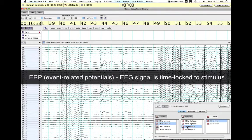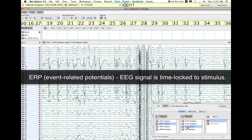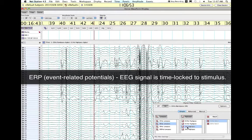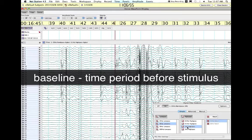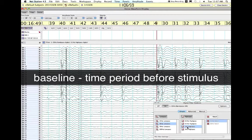When the EEG signal is time-locked to a stimulus which the participant reacts to, it's called ERP, or event-related potentials. The time period before the presentation of a stimulus in an ERP experiment is called the baseline.